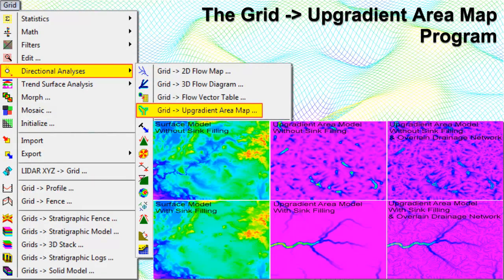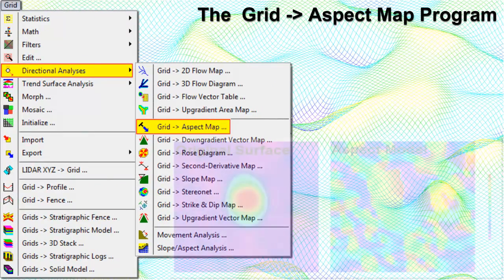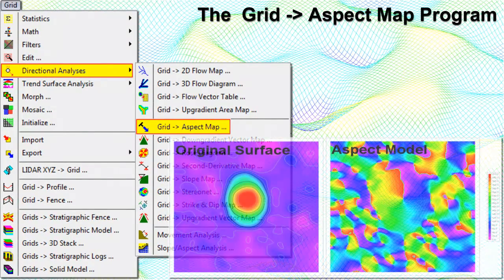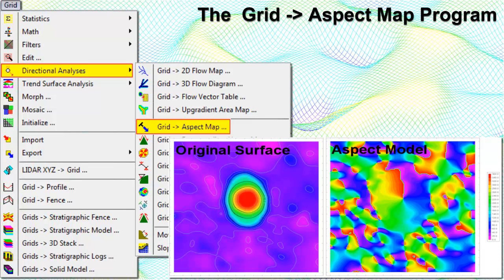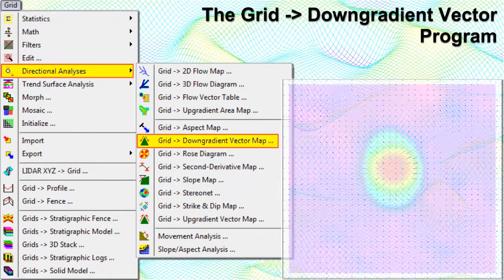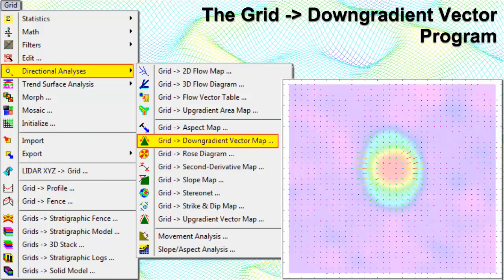The Upgradient Area Map program reads a grid model and creates a map representing the number of grid nodes that are up-gradient from each node. The Grid to Aspect Map program computes the changes in grid node Z values — such as elevations or concentrations — between neighboring nodes, noting the direction from 0 to 360 degrees of downhill slope. The resulting direction or aspect values are stored in a new grid model with options for generating a 2D map, 3D surface, and a grid statistics report.